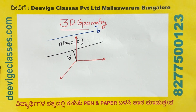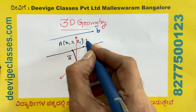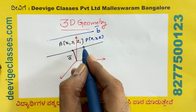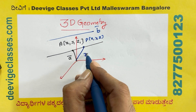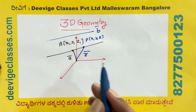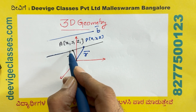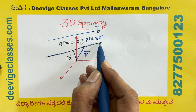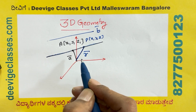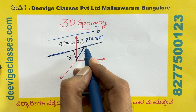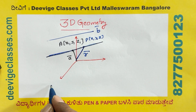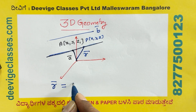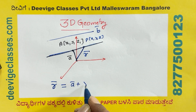Let P of x, y, z be an arbitrary point whose position vector is R vector. P is a moving point on this line, and we are finding the equation of this line. So R is given by: R vector equals A vector plus lambda B vector. We are going to prove this.